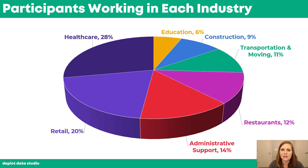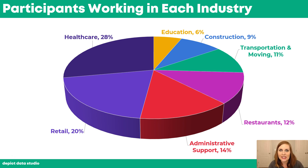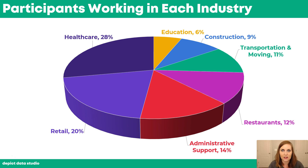For example, we've got six percent of their career coaching participants working in education and nine percent in construction, and so on. If you're familiar with my pie chart guidelines, you know that this cannot stay in a pie chart for a couple of reasons. The first one is that it's poorly formatted — it's 3D, and there are those little leader lines, the gray lines connecting the words to the slices, which just makes it look more cluttered than it needs to.